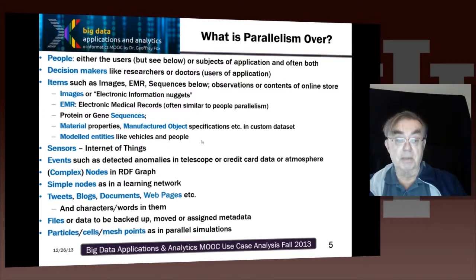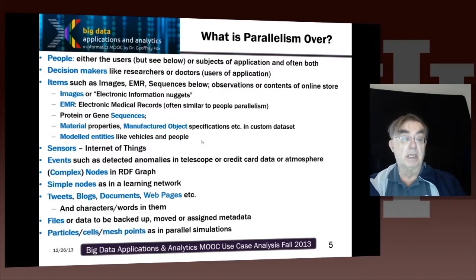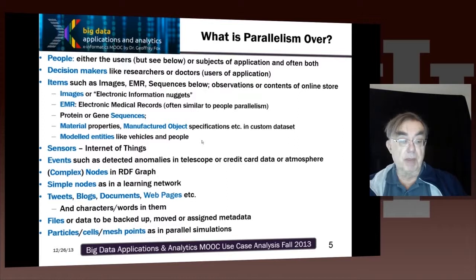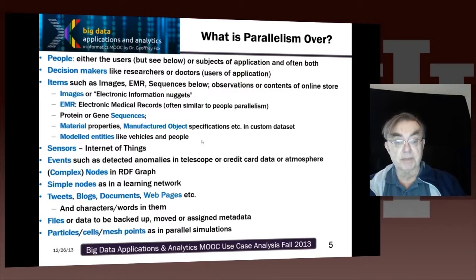Another set of things you get parallelism over is tweets, blogs, documents, and web pages — which you encounter when doing information retrieval. You also get parallelism over the characters and words in those entities. A lot of those applications are set up in the so-called bag of words model, where the words essentially represent the dimensions of vectors representing the document. Another simple form of parallelism is over resources like files or the data itself, when you want to do parallel backup or process the data in parallel.